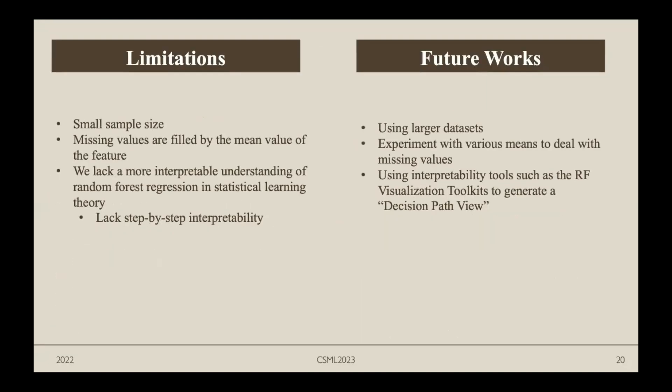However, we still have some limitations. For example, the sample size is not very big because sample size for double perovskites is very limited. Secondly, missing values are filled by the mean value of the feature, which we believe can be experimented with. Thirdly, we lack a more interpretable understanding of random forest regression in statistical learning theory. How this can be improved: use larger datasets, experiment with various methods to deal with missing values, and develop using interpretability tools such as RF visualization toolkit for a decision path view for better understanding of results.